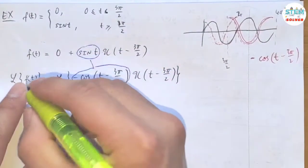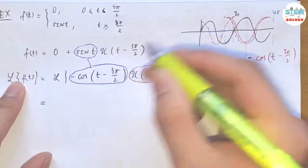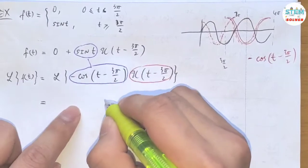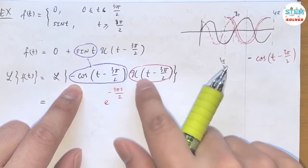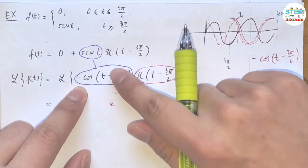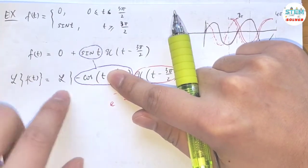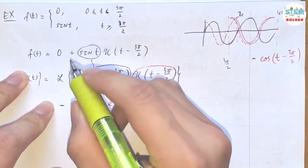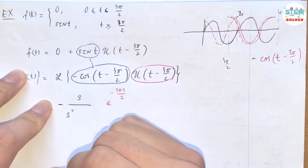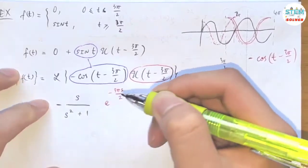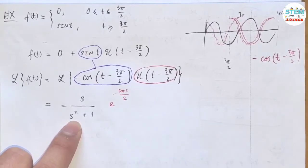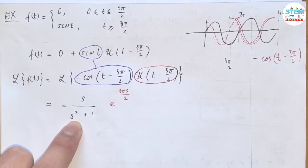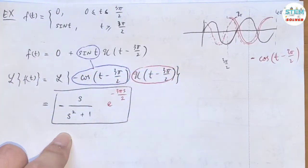Now, since the argument matches up, we can find the Laplace transform. I'm going to work this out right away because I know this Laplace transform very easily. It is e to the negative 3π/2 s times the Laplace transform of cosine of t. Don't forget the negative sign. The Laplace of cosine of t equals s over s squared plus 1. So the final answer is: negative s over s squared plus 1, times e to the negative 3πs over 2. This is your final solution.